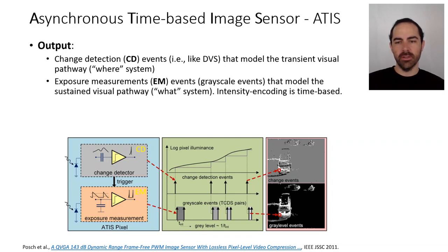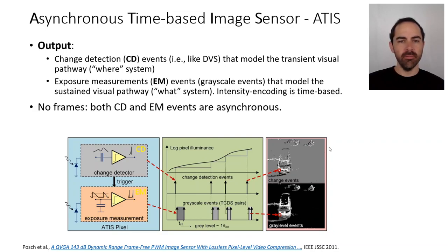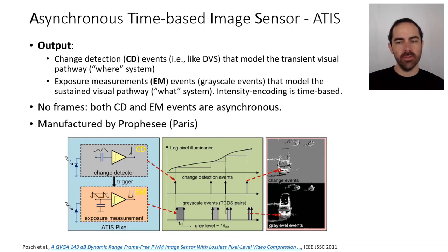On the top are the change detection events, and on the bottom are the exposure measurement or grayscale events. There are no frames — both change detection and exposure measurement events are asynchronous. This is a sensor that was developed in France, and it's manufactured by Prophesee.